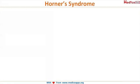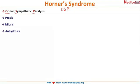Horner's syndrome is also known as OSP — ocular sympathetic paralysis. The three components you have to remember are: ptosis (number one), miosis (number two), and anhydrosis (number three). As soon as you hear Horner's syndrome, these are the three features that must immediately come to mind.